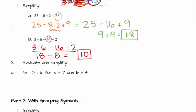Now, if I want to evaluate and simplify, there's one more step. I need to plug in these numbers. And then, I can simplify. So, everywhere that I see A, I'm going to replace it with 7. And everywhere I see B, I'm going to replace it with 4.